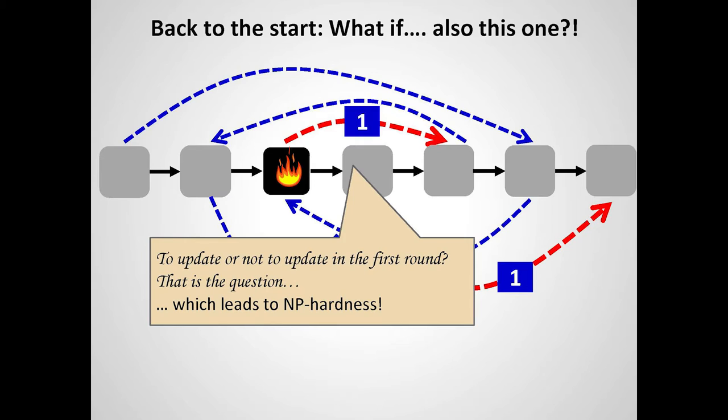This NP-hardness is for a very special graph topology. If you have additional properties like bounded treewidth, or a sparse or tree-structured graph, these problems can be overcome. We are currently exploring what kinds of graphs allow polynomial-time or even optimal algorithms to schedule these updates.